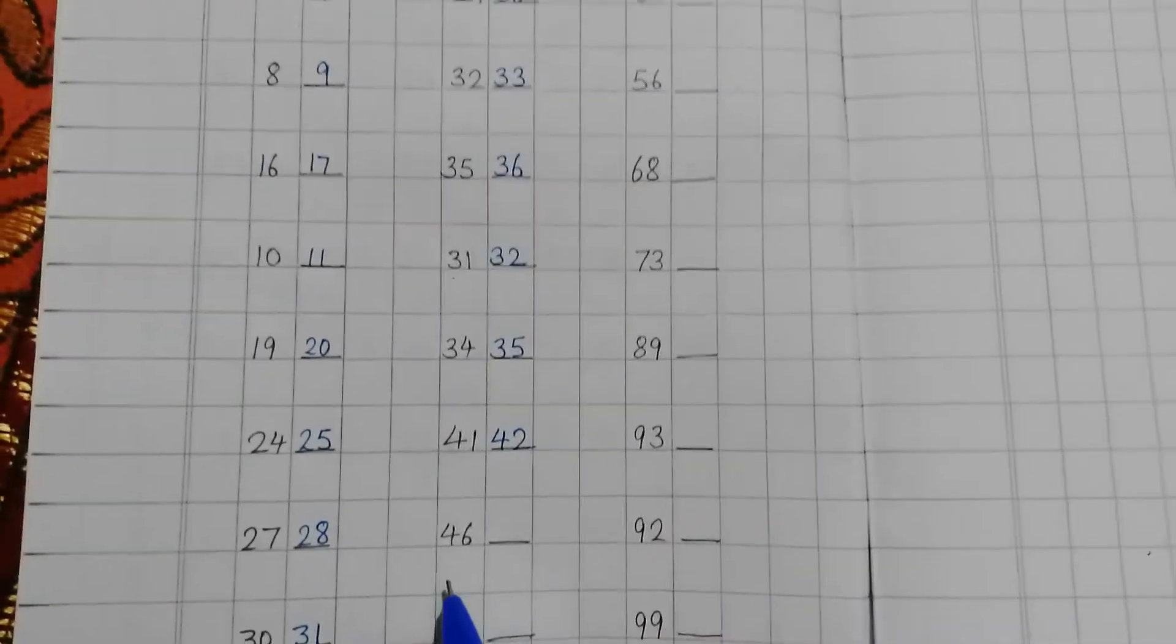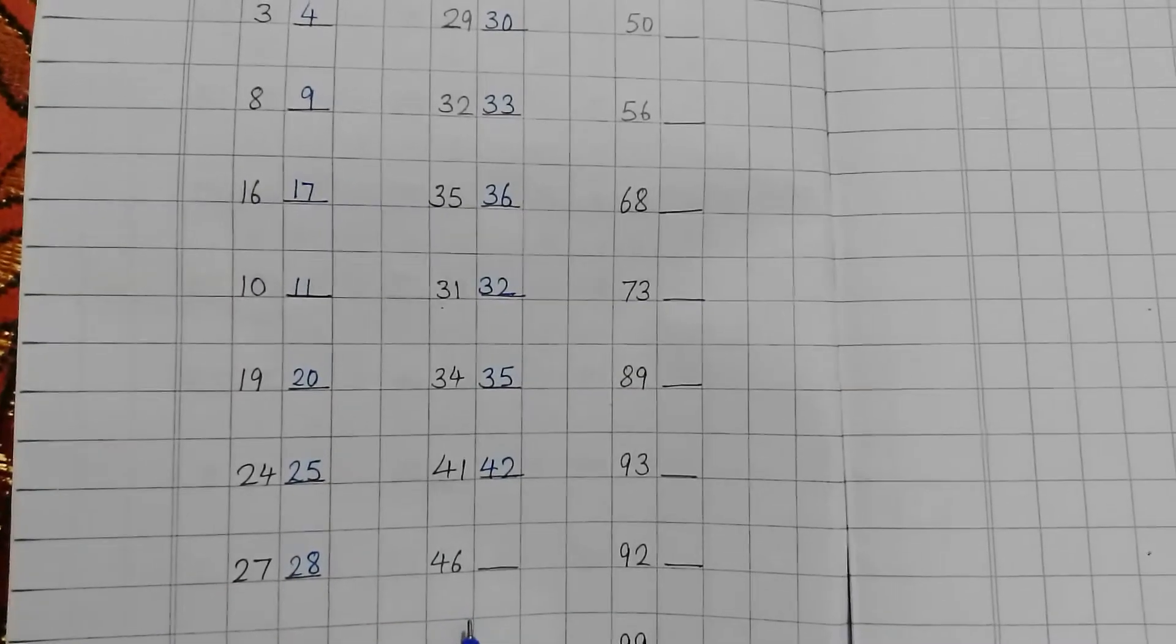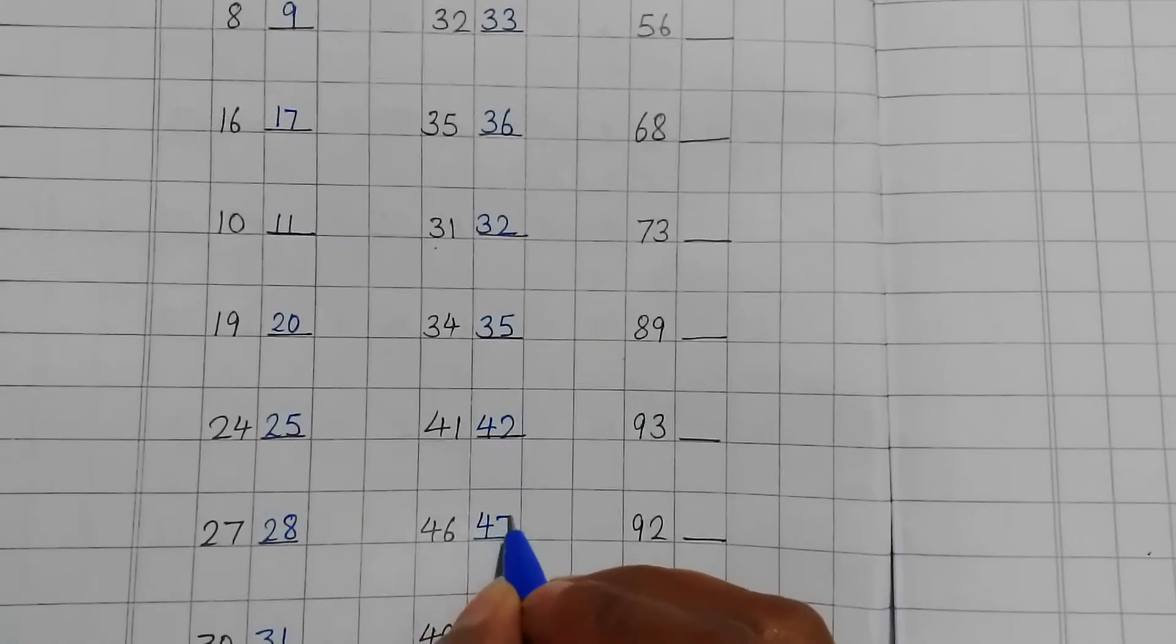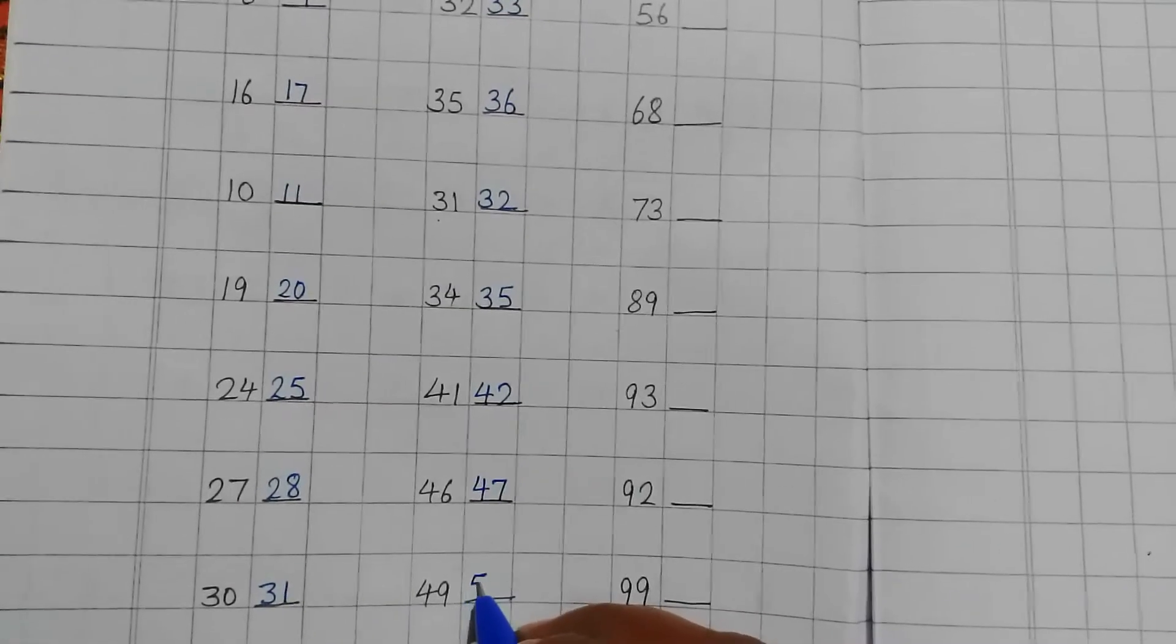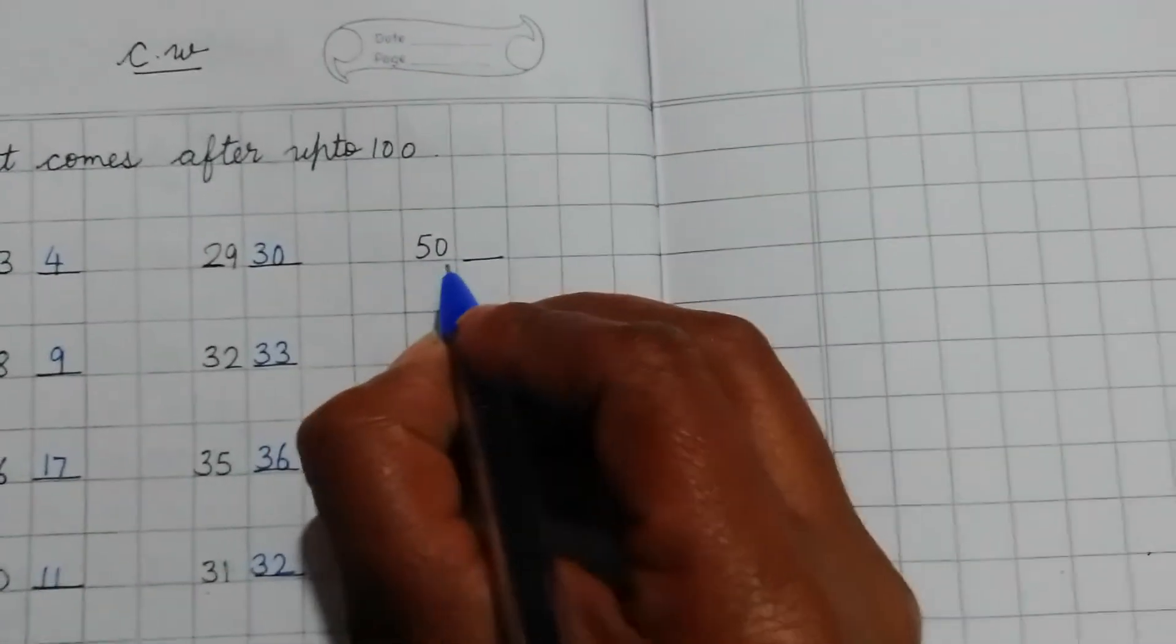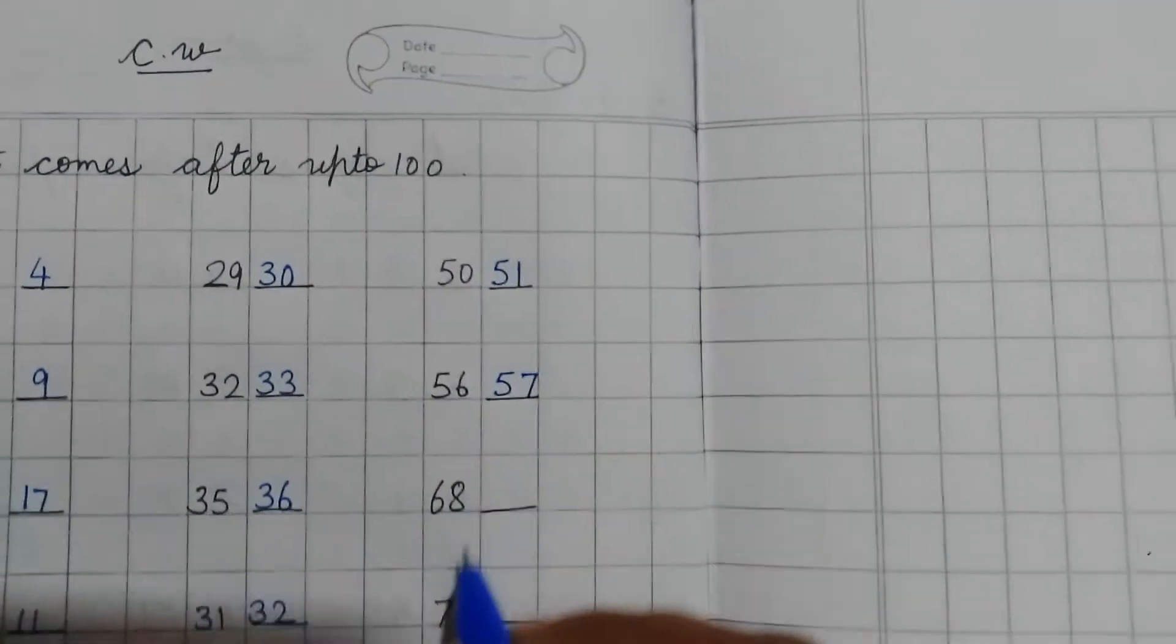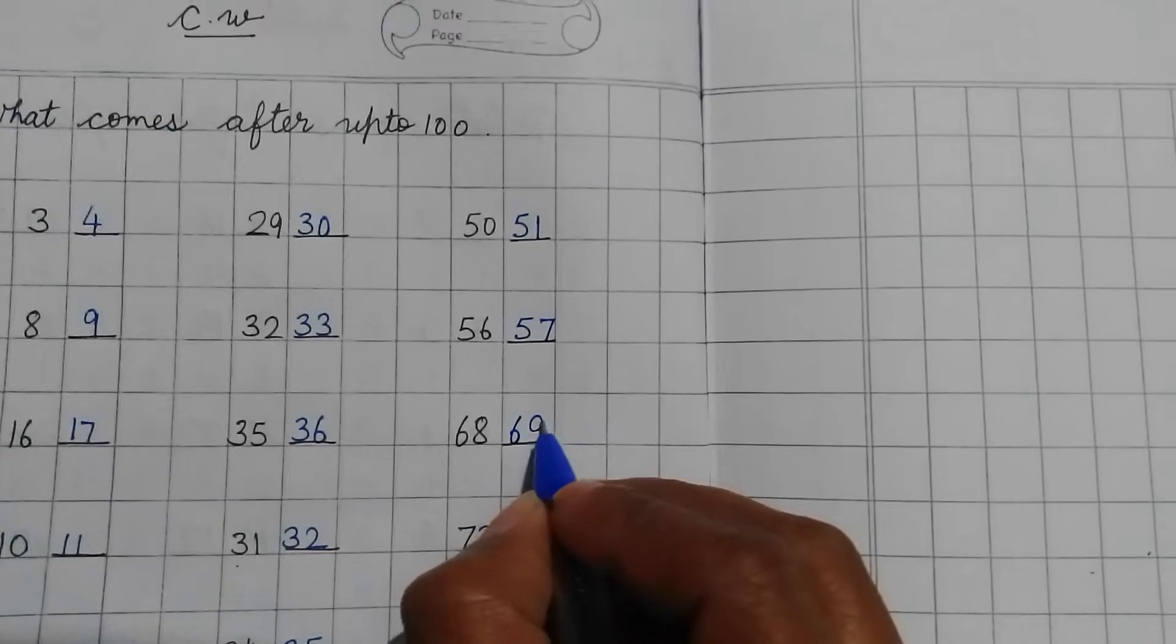Next number is 47. So 48. Then 49. 51. 56. 57. Next number is 68. 69.